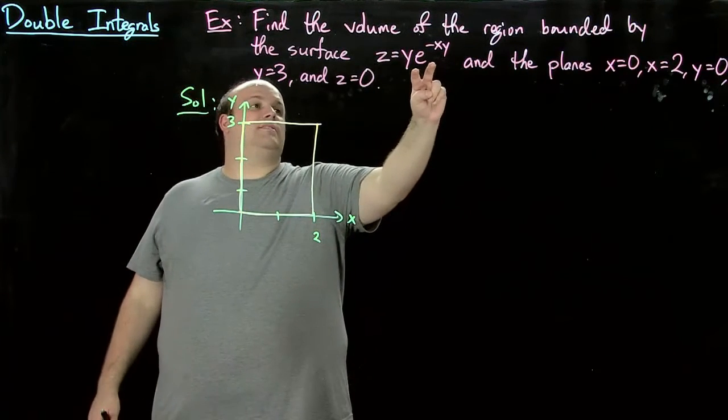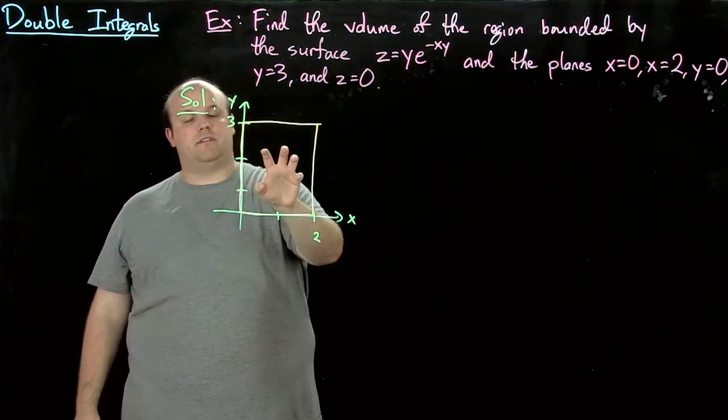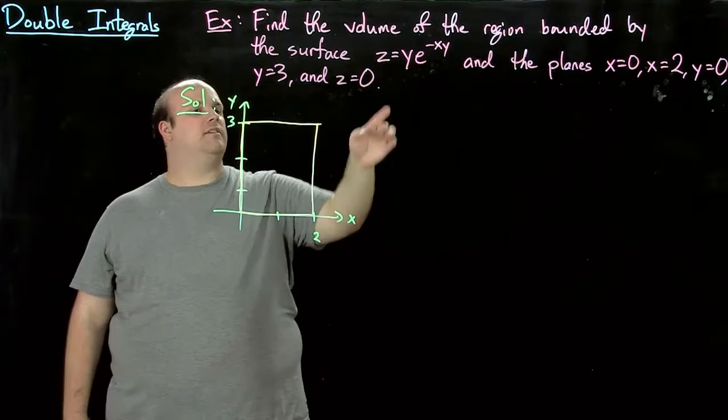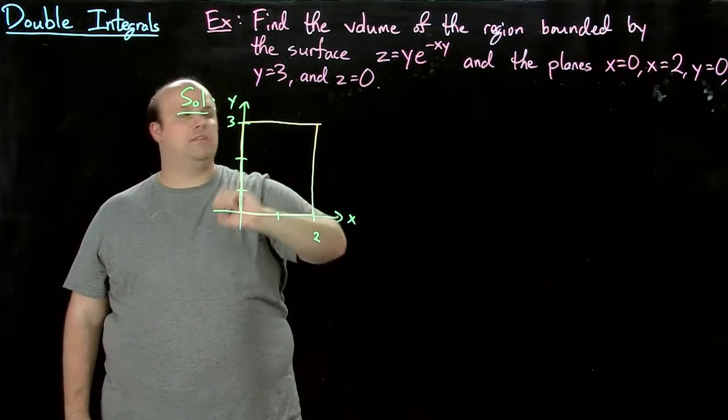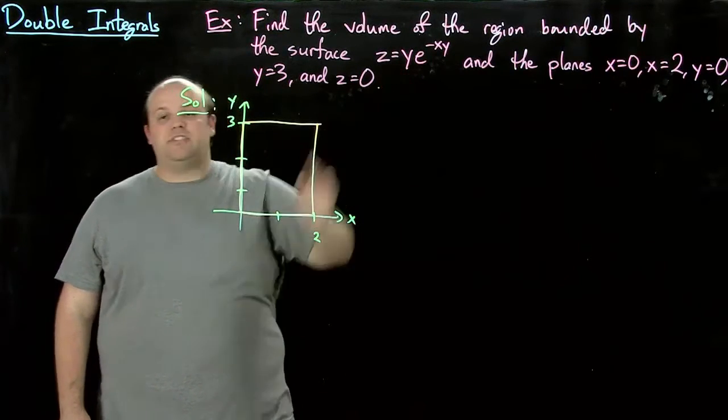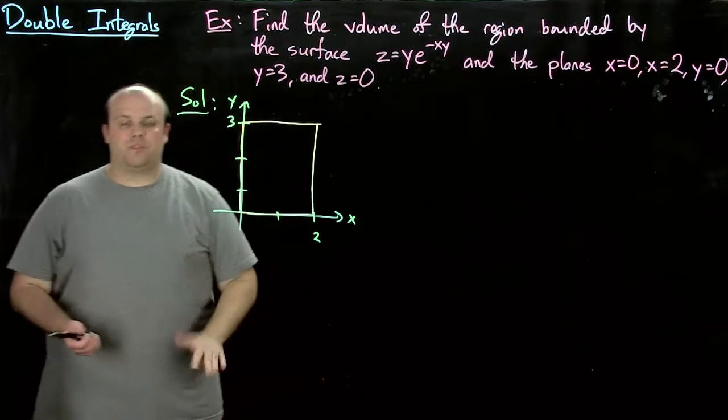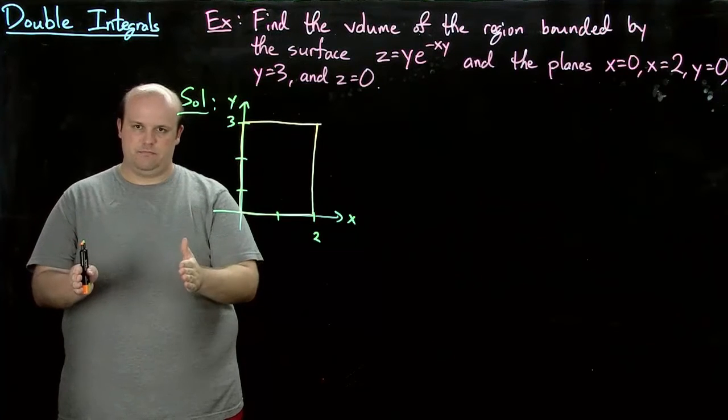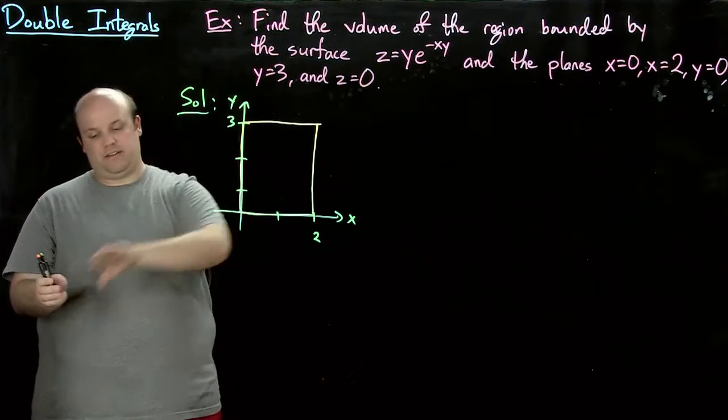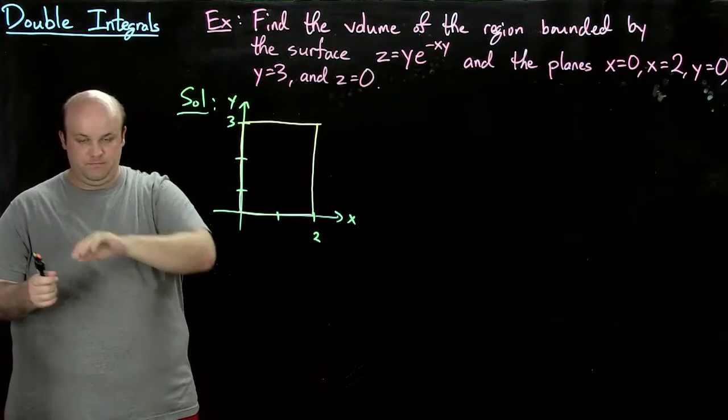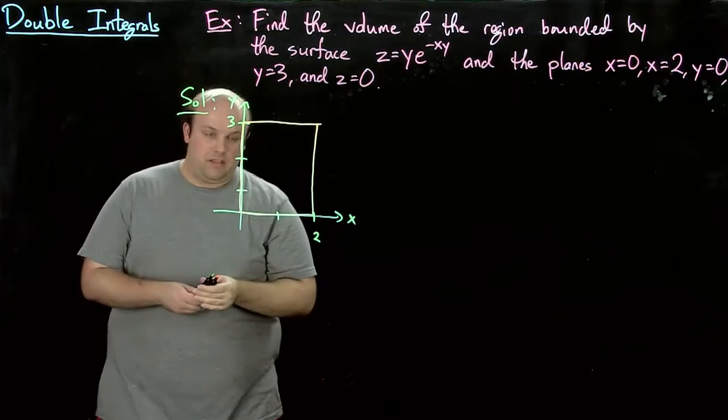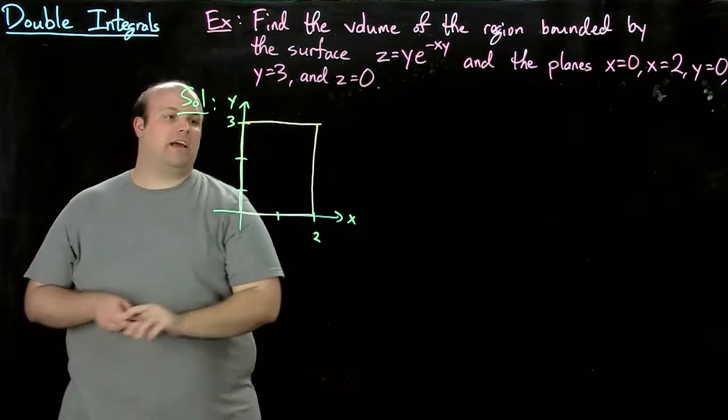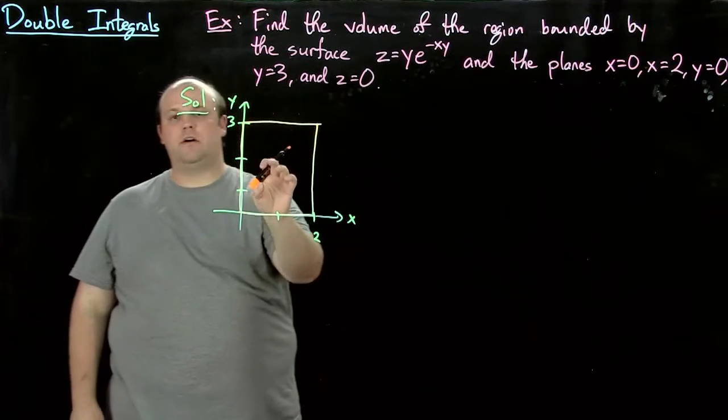Now since this function here is always positive on the rectangle, because e to the minus xy is always positive and y is positive, you can imagine this as sort of the ceiling. So you have z equals 0 down here, you have the four x and y planes over here, and then you have that surface as kind of a roof. So if we want to find the volume, we have to integrate this function over this rectangle.